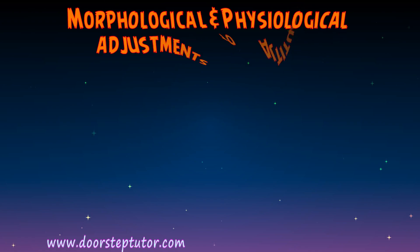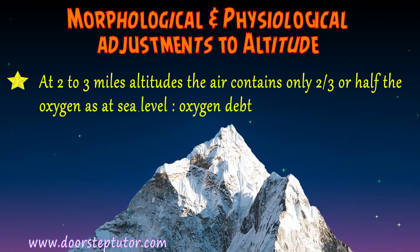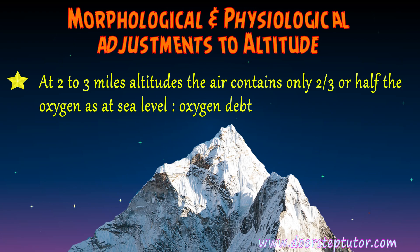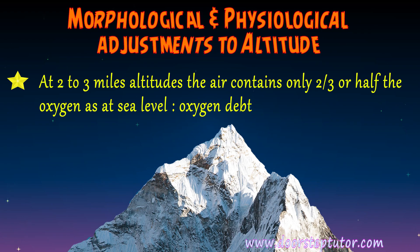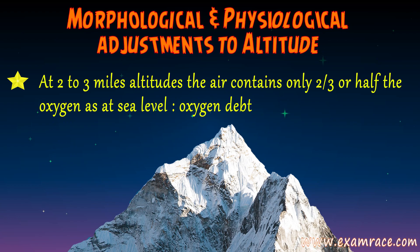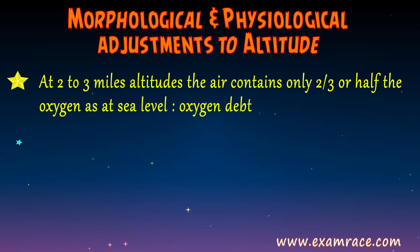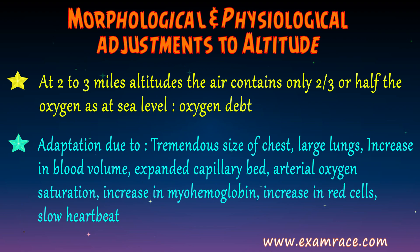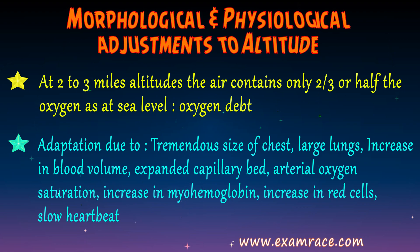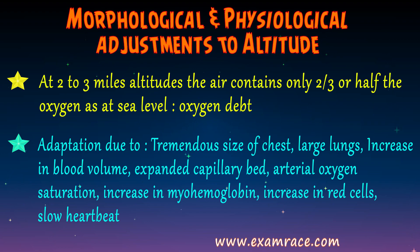Coming to morphological and physiological adjustments to high altitude — considering altitudes of two to three miles — the air contains only two-thirds to one-half the oxygen as at sea level. A proper supply to bodily tissues must be maintained at all times; otherwise the body develops oxygen debt, which can result in circulatory failure, sickness, and death. Adaptations enabling survival at high altitude include the tremendous size of the chest, which overshadows the rest of physical development, with some people having a barrel chest with a decided expansion of the lower part of the rib cage.